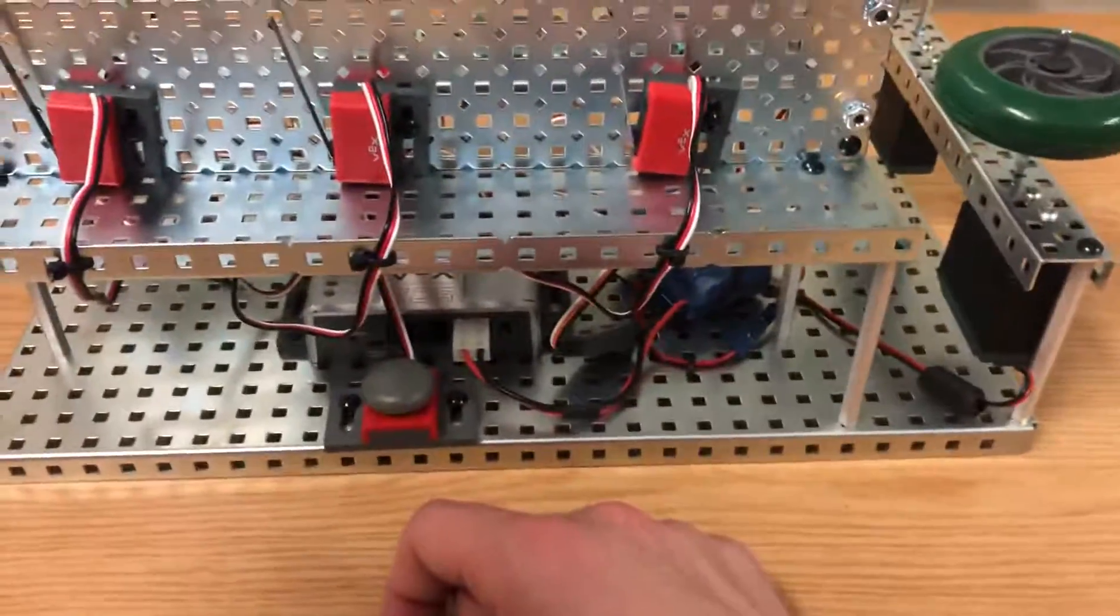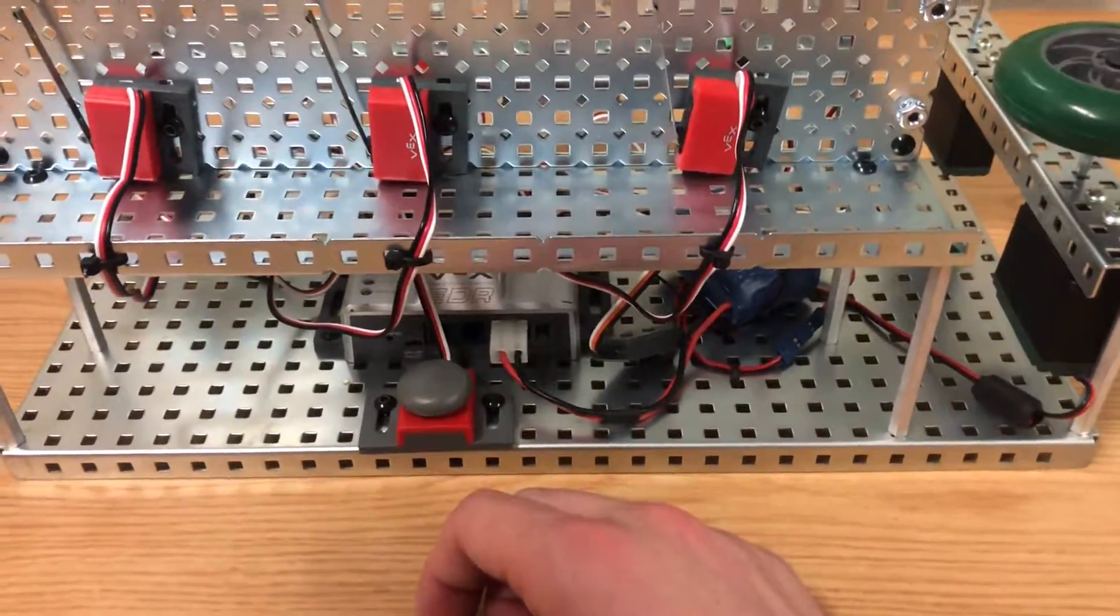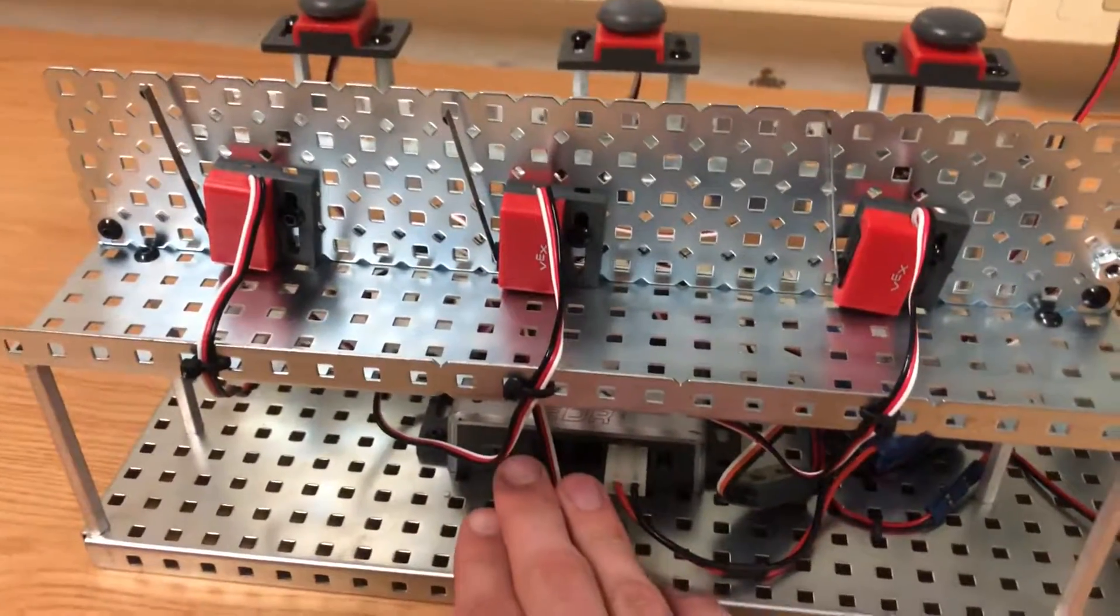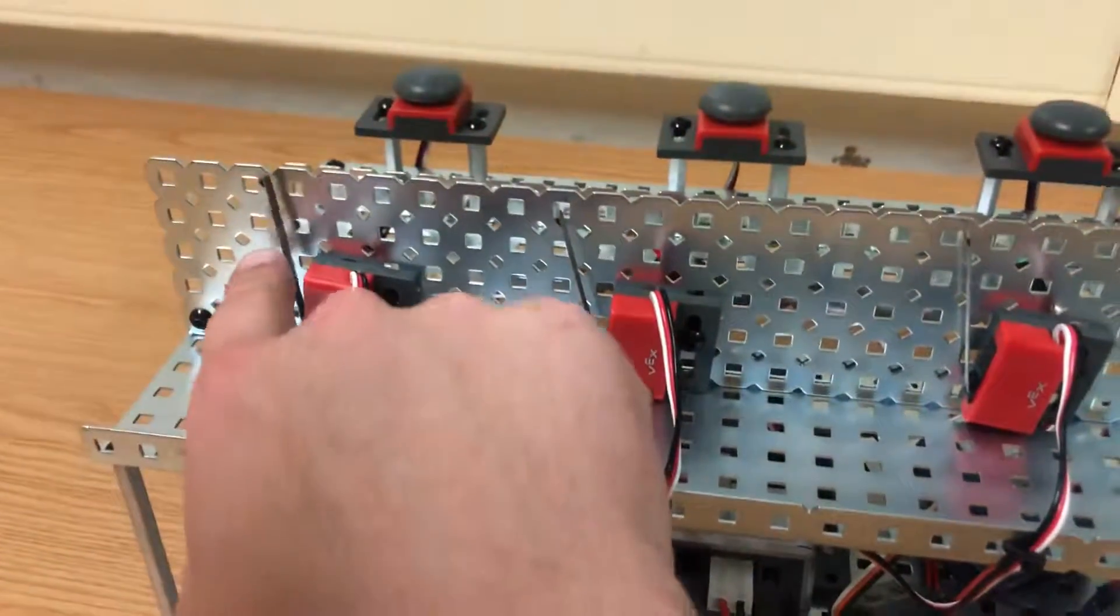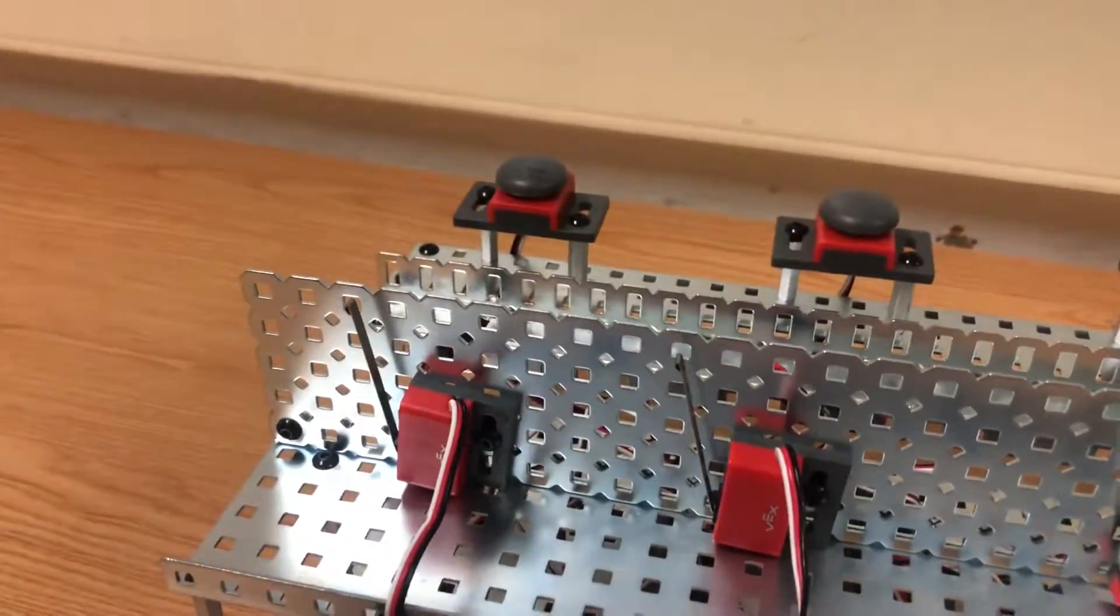The other function it has is for allowing Alex to choose whether or not the answer is correct or incorrect. So if Alex is holding down the button and a contestant answers the question incorrectly, he would press the limit switch and that would mean that the contestant got it wrong and they would have points subtracted.